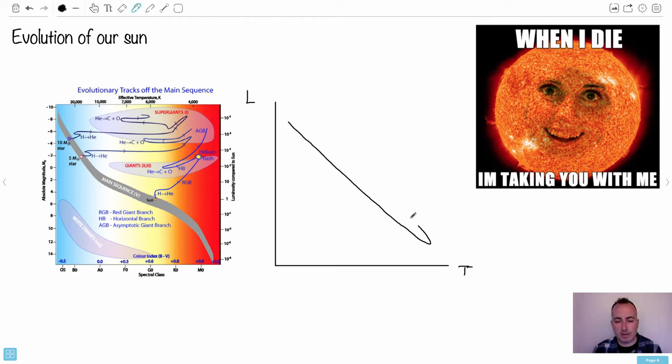Remember what this is? This is the main sequence, right? So it's important to know, all right, here's the main sequence, and our sun is roughly here. This is our sun. Remember, this is about 30,000 degrees Kelvin. This is about 3,000 degrees Kelvin. Our sun is somewhere in the middle. So we have a certain luminosity here, right?